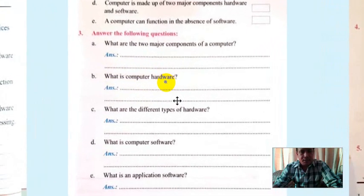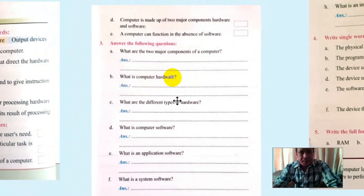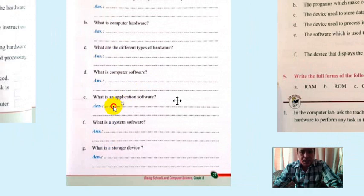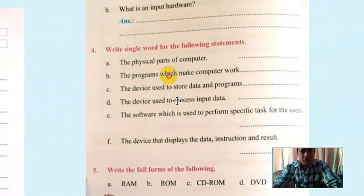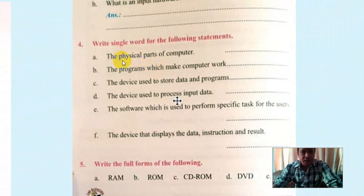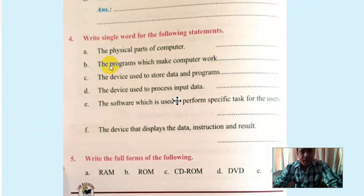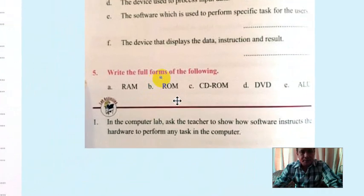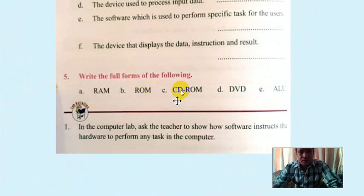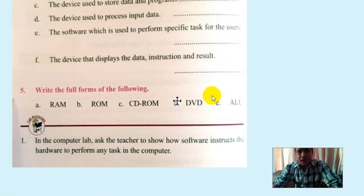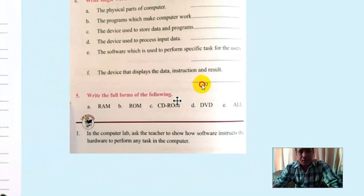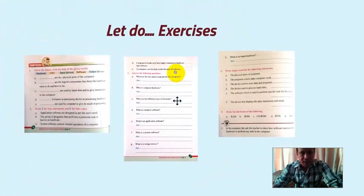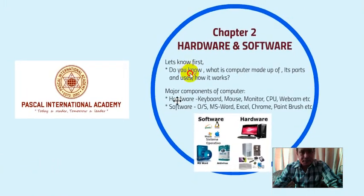Computer hardware is the physical part of the computer — for example keyboard and mouse. There are four types of hardware — write them in your book. Complete question-and-answer up to question G. Full forms: RAM is Random Access Memory, ROM is Read Only Memory, CD-ROM, DVD, and ALU is Arithmetic Logic Unit. In the CPU there are two units: CU (Control Unit) and ALU (Arithmetic Logic Unit). Do all the homework properly and send it to me. Thank you for the class, Class 5, bye bye.